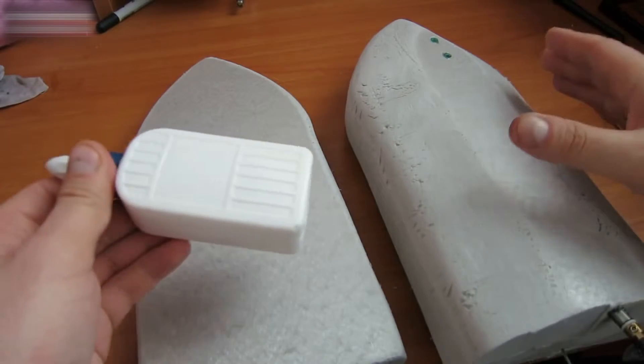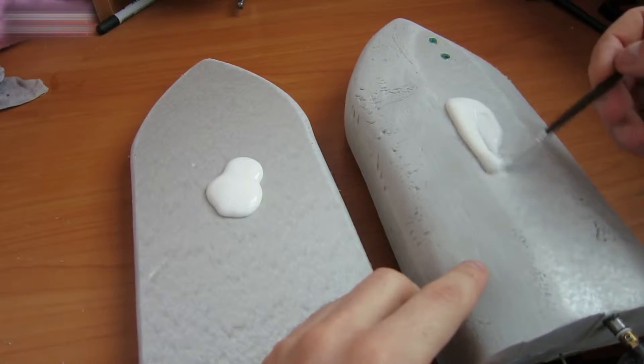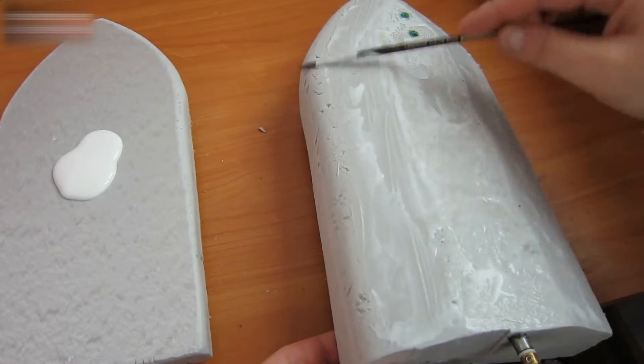Put the PVA glue onto the boat's external parts, the hull and the cover. If you know why, leave a comment below.